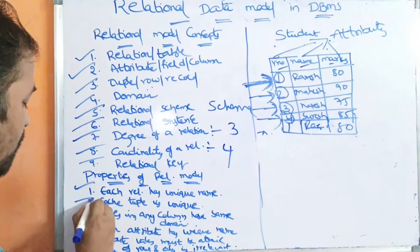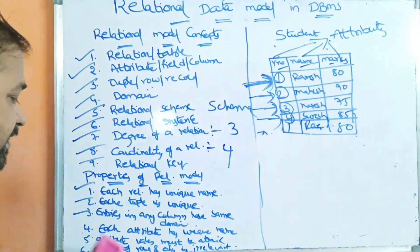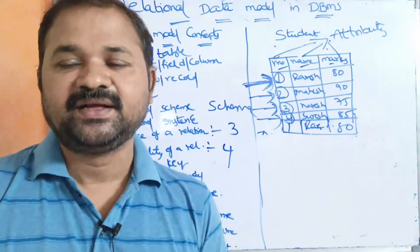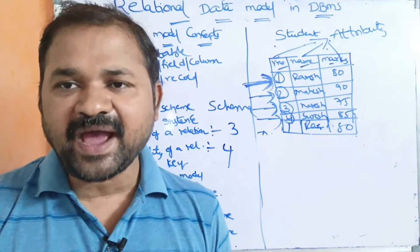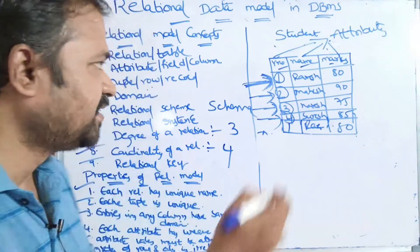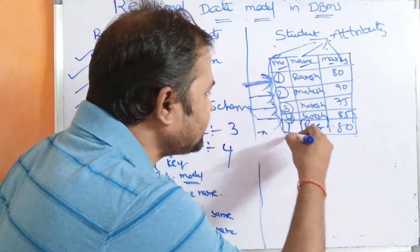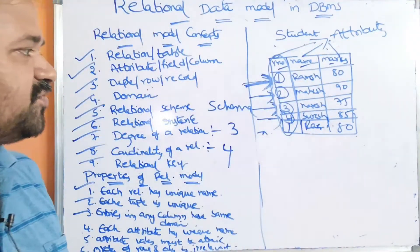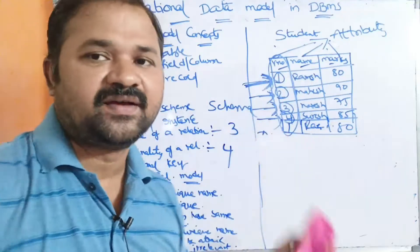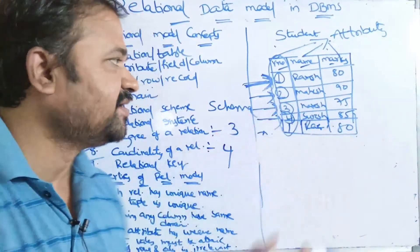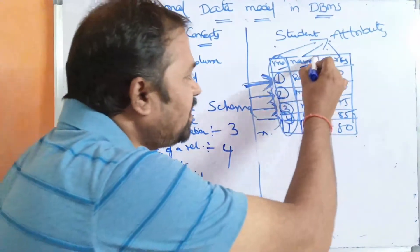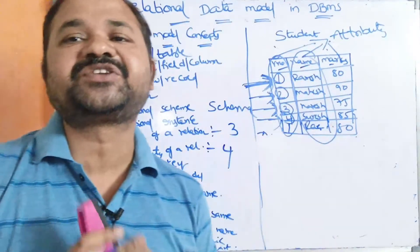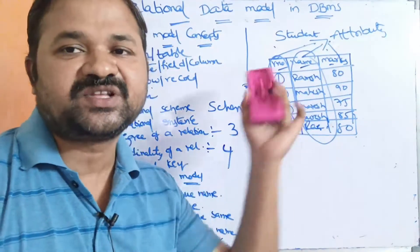The next property is: entries in any column have the same domain. For example, the roll number column has domain integer — we must enter only integer values. And the name column has domain string — we must enter only string values.